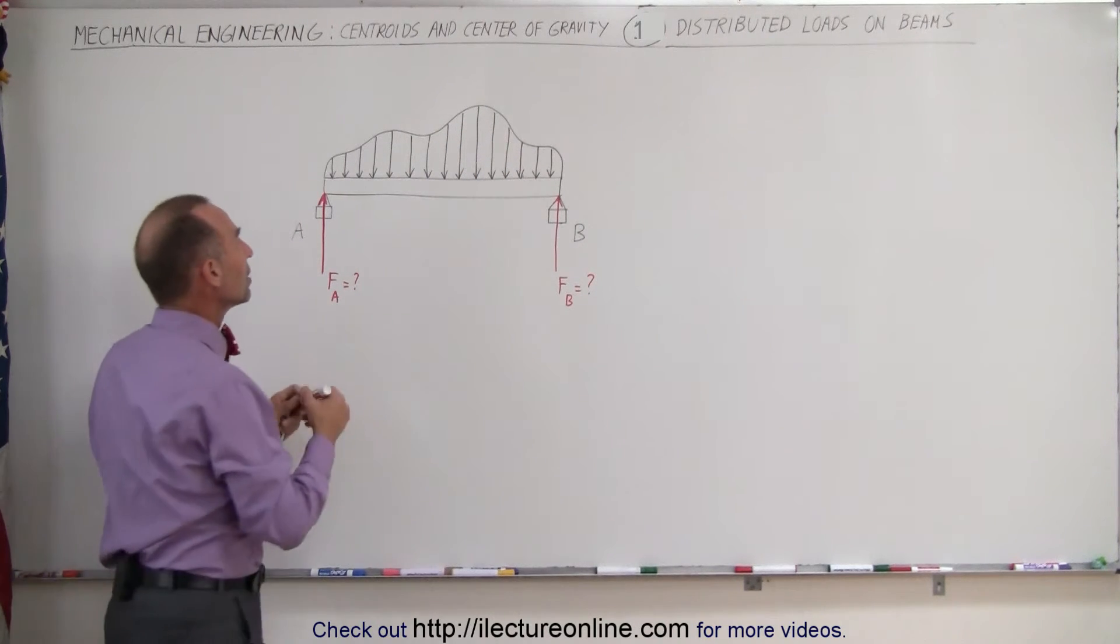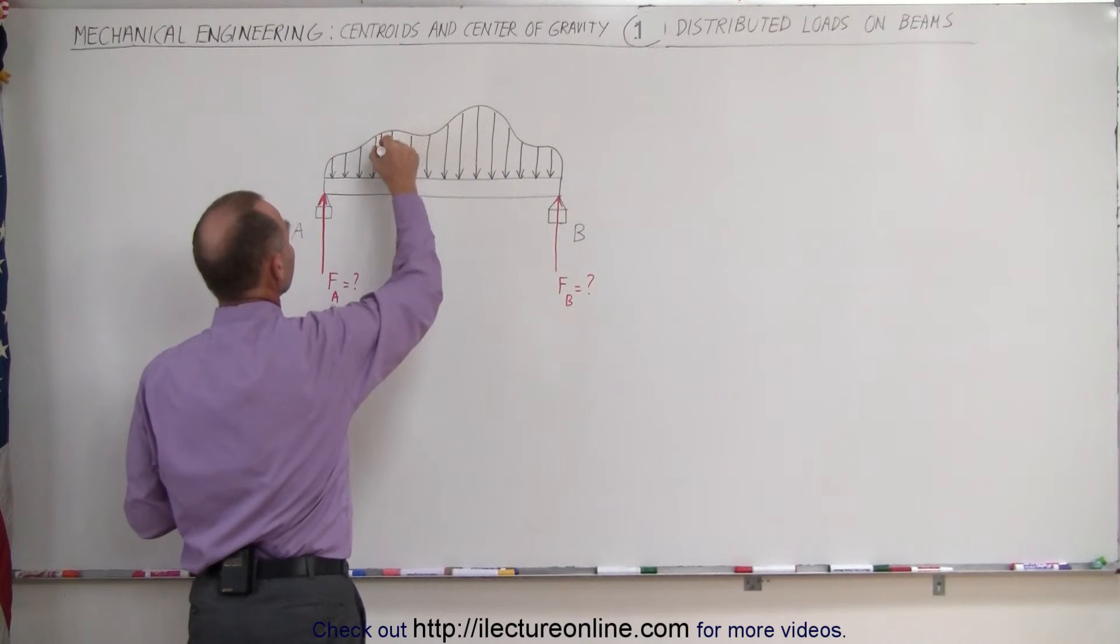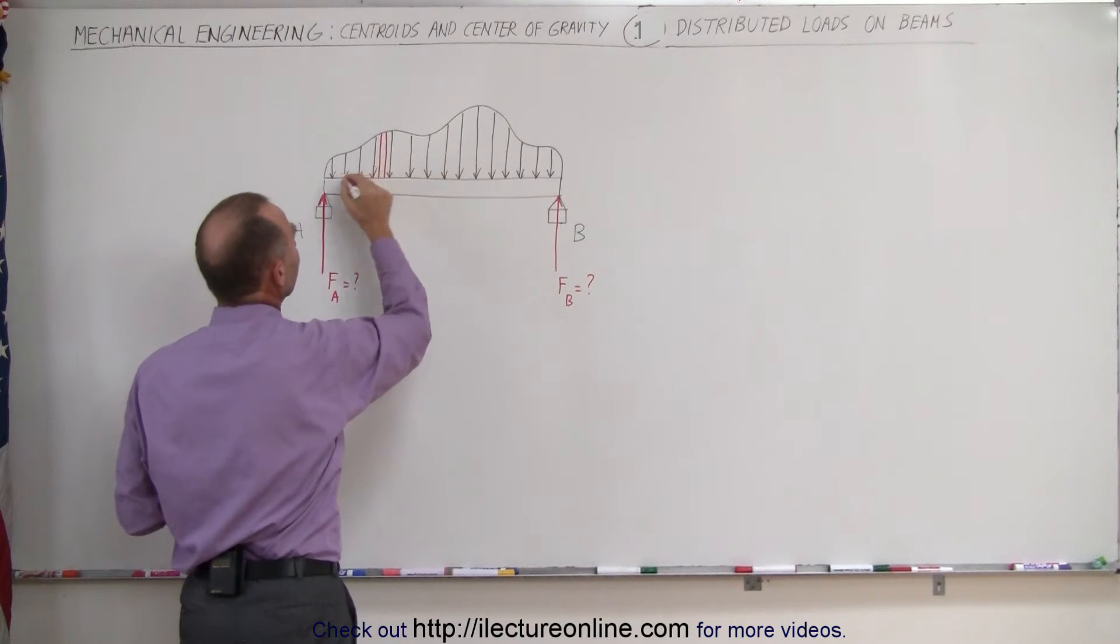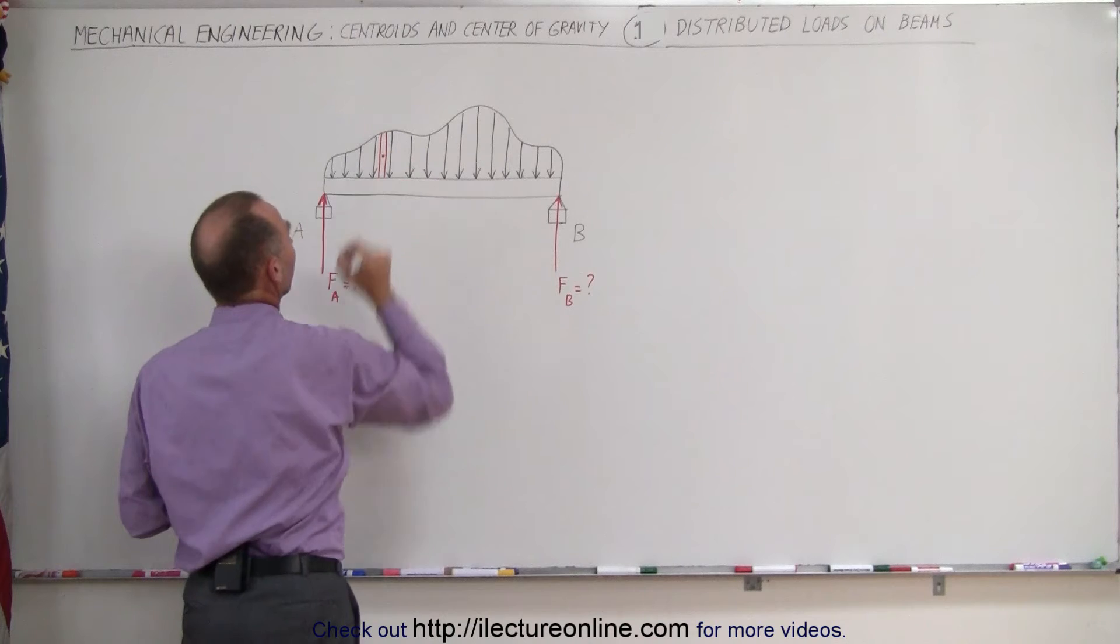In other words, what we can do here is we can take a small segment, calculate the force acting on the beam on that small segment, and then the centroid in the x direction, of course, would be right there.